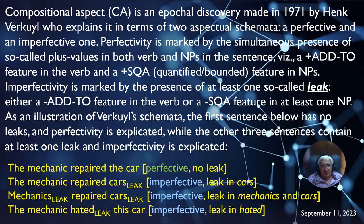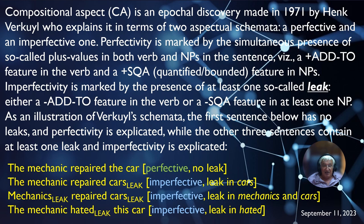As an illustration of Verkerk's schemata, the first sentence below has no leaks and perfectivity is explicated, while the other three contain at least one leak and imperfectivity is explicated. The first sentence is 'the mechanic repaired the car' — perfective because it has no leaks. The second sentence is 'the mechanic repaired cars' — imperfective because 'cars' is a leak: it is non-bounded, we do not know where cars begins and where cars ends, and for this reason the situation itself is imperfective.